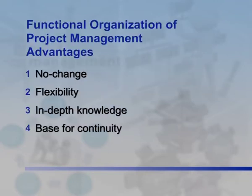Fourth, base for continuity: the functional division serves as a base of technological continuity when individuals choose to leave the project and even the parent firm. Procedural, administrative, and overall policy continuity also results when the project is maintained in a specific functional division. Fifth, easy post-project transition: the functional division contains the normal path of advancement for individuals whose expertise is in the functional area. The functional field is their professional home and the focus of their professional growth and advancement. However, just as there are advantages, there are disadvantages as well.